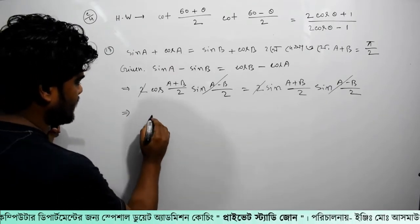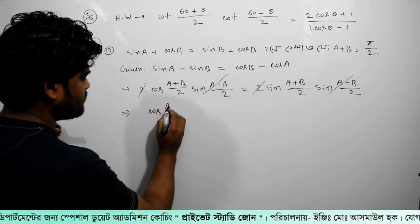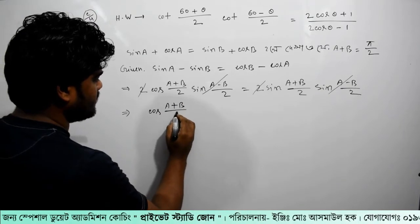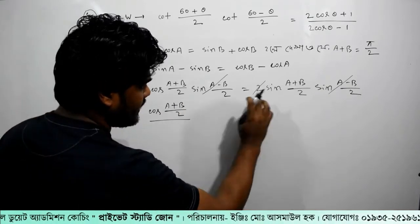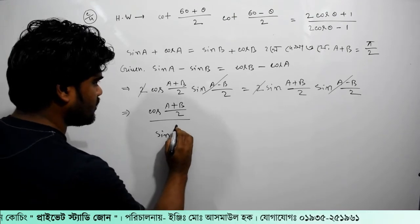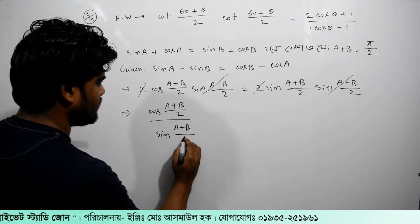So, we have cos(A plus B) divided by 2 divided by 2 is equal to sin(A plus B) divided by 2.